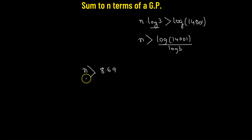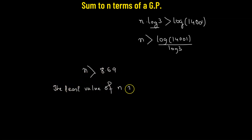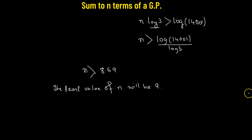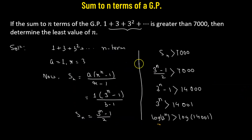Evaluating, log 14001 divided by log 3 equals approximately 8.69. Since we need to find the least value of n, the least value of n is 9. This means that when there are 9 terms in the given geometric progression, the sum is greater than 7000.